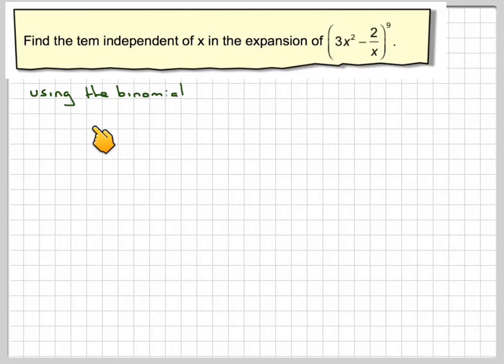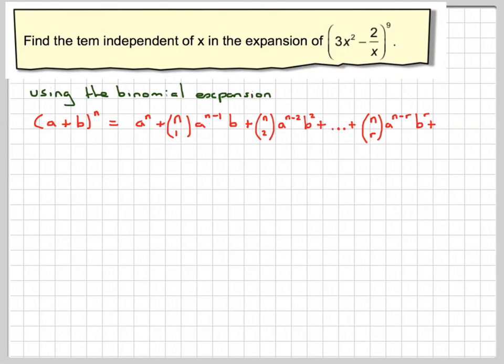If we use the binomial expansion, we have that a plus b to the n is equal to a to the n plus nc1, a to the n minus 1, b plus nc2, a to the n minus 2, b squared. This carries on. Now we get some sort of general term, some sort of general pattern.